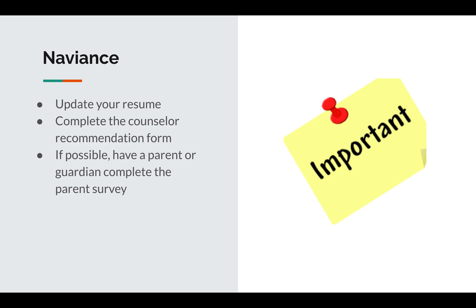Lastly, if possible, have a parent or guardian complete the parent survey. This parent survey can also provide tremendous feedback that can be very beneficial information for the college application process. This survey can be found in the About Me tab in Naviance.